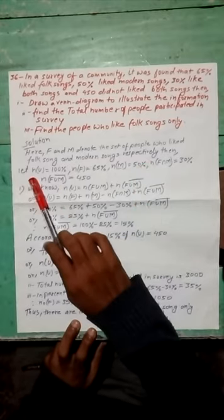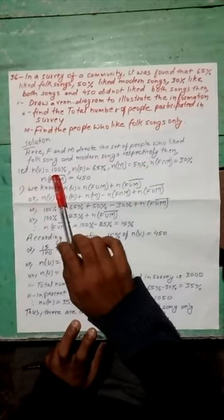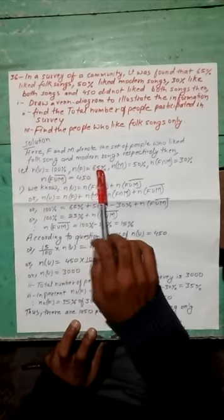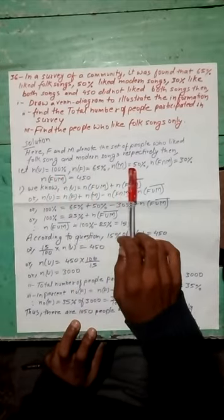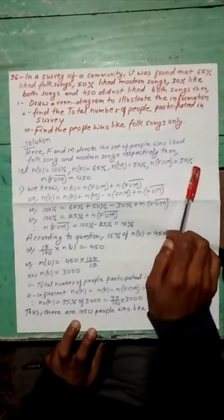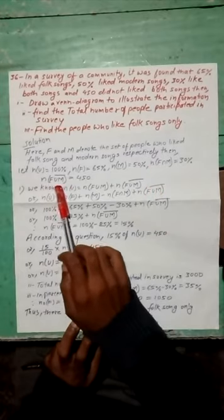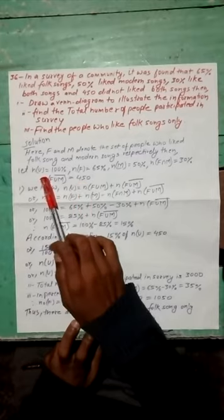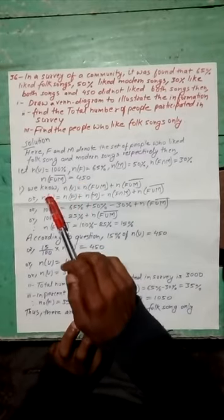let n(U) equal to 100%, F equal to 65%, M equal to 50%, F intersection M equal to 30%, and F union M complement equal to 450.